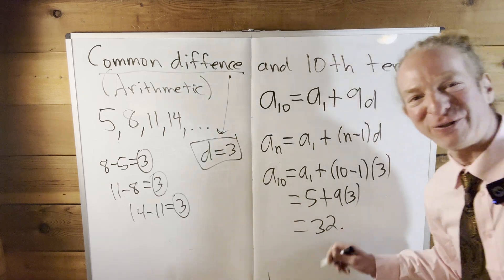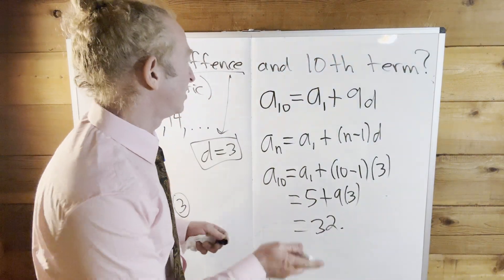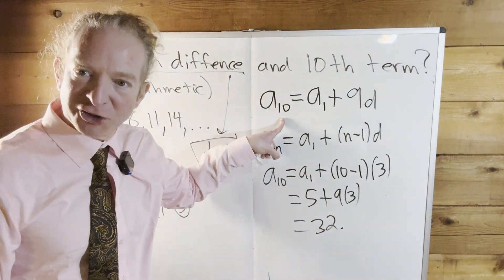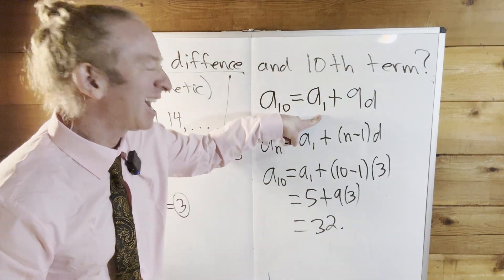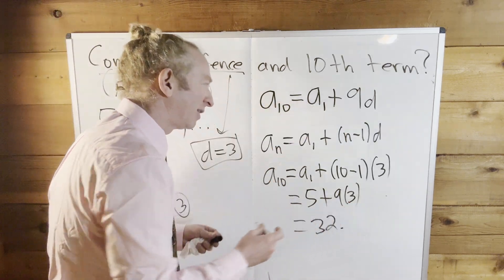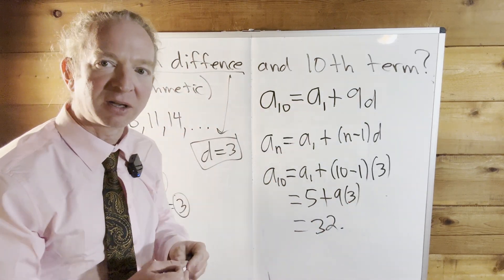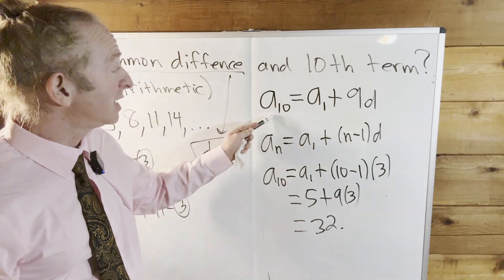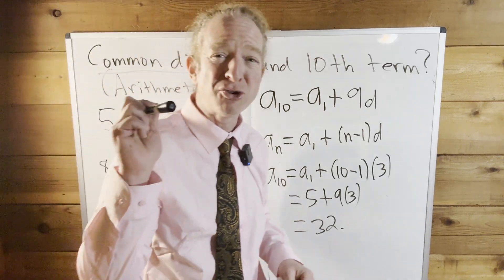So yeah, it just feels harder. I like to think of it as you know, to get to the 10th term from the first term you have to add nine common differences. To me that's a little bit better than using the formula, but you can't say that in a book. I mean you can type it out, it's not the same.